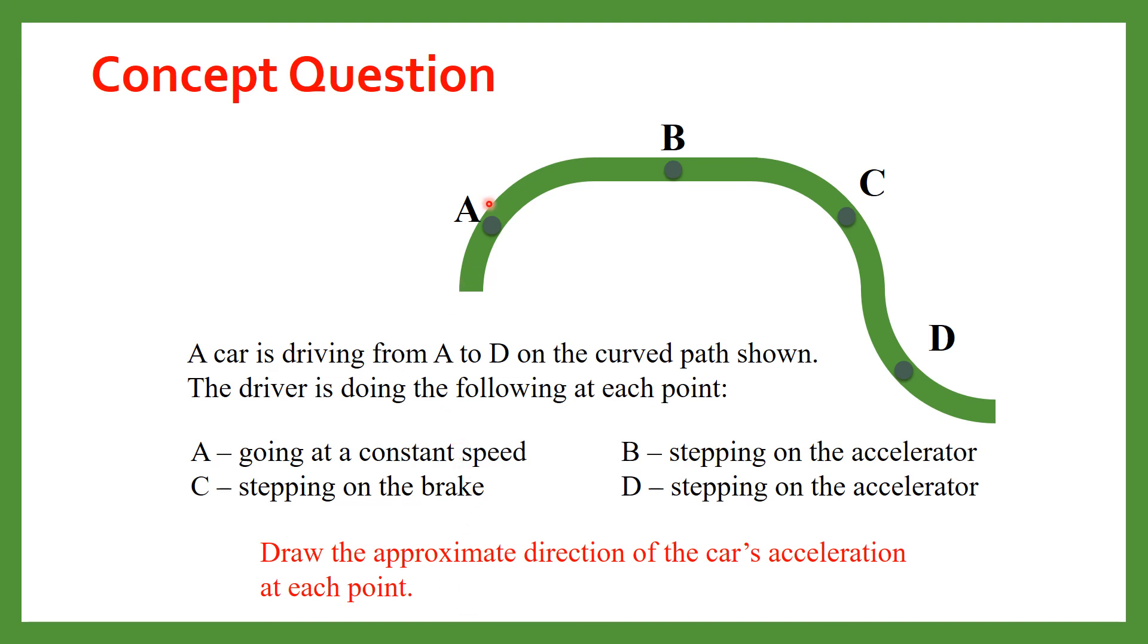So at A because your car is moving at the constant speed so the acceleration will be in radial direction. And at B it is in the tangential direction in the same direction as your vehicle is moving and at C you are applying the brake so the direction of the acceleration will be just reversed.